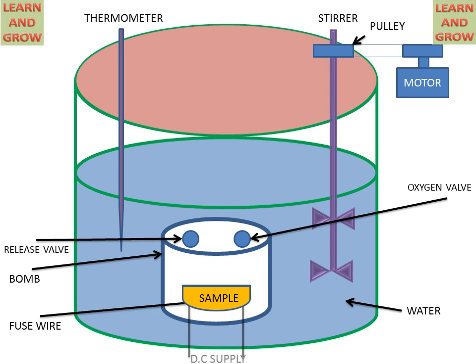Having completed the experiment, the bomb is removed from the calorimeter. The pressure is slowly released through the releasing valve, and the contents of the bomb are weighed again. The heat generated by the combustion of fuel and fuse wire is partly absorbed by water and partly by the metal of bomb and calorimeter.